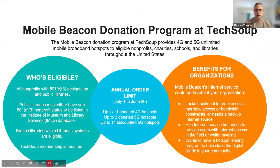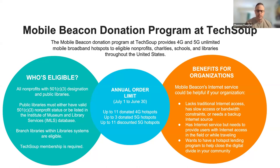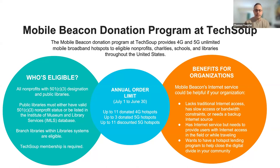The reason you're all here is our partnership with TechSoup, which allows a donation program for hotspots that saves costs for you. We have some exciting inside information: while we've traditionally had 4G, we're working on a 5G offer coming soon — and we've lowered the cost of 5G to $120 for the year. Who's eligible? All nonprofits with a 501(c)(3) designation and public libraries. Public libraries must be in the IMLS database or listed as a 501(c)(3) with the IRS.